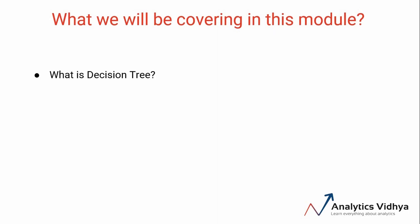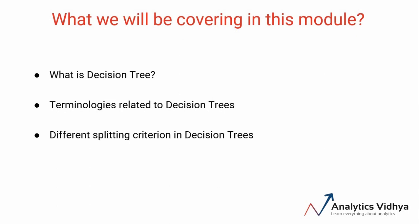We'll first look at what is a decision tree, discuss the terminologies related to decision trees, and look at different splitting criteria in decision trees. Moving forward, we'll look at the pros and cons of decision trees. Finally, we will implement decision tree in Python to get a solid and practical understanding of this wonderful algorithm. During the implementation we'll also see how to plot a decision tree and save it in an image format, which is extremely helpful when we're explaining our model.